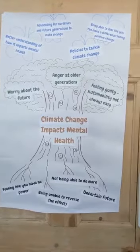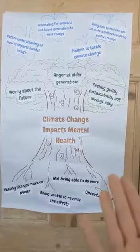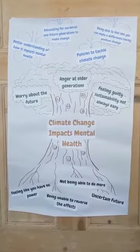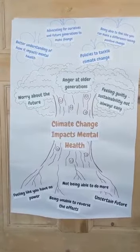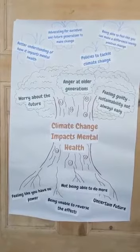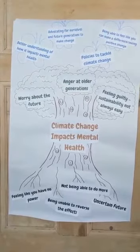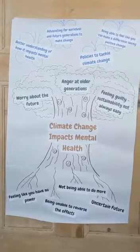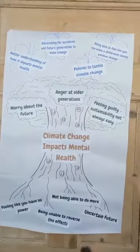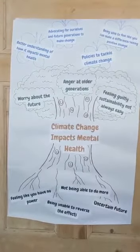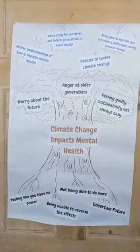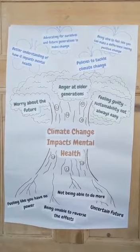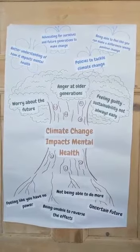Here we have my problem tree in its full form — it does look somewhat like a broccoli but I think we're going to go with it. As you can see in the middle, the issue I've chosen to focus on today is the way climate change impacts mental health. That's the trunk, the core of our issue. The different parts of the tree represent the different components that we're going to look at in more depth today.